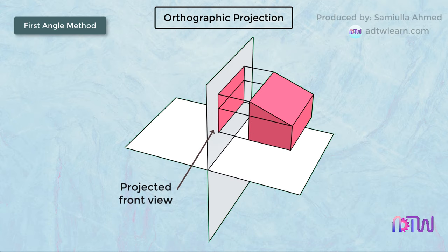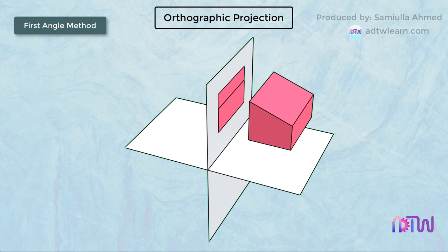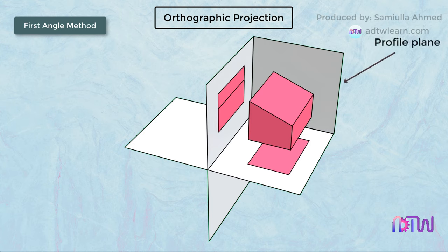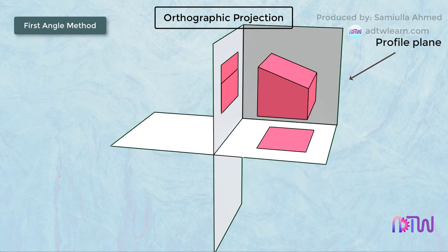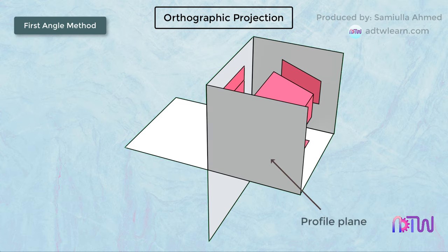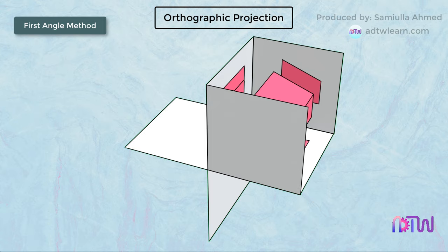When the viewer views the object from the top, its top view is projected on the horizontal plane of the first quadrant. For the left-hand side view, we consider another parallel plane placed on the right side of the object, and the left-hand side view is projected onto that profile plane. For the right-hand side view, we consider another parallel plane on the left side of the object, and the right-hand side view is projected onto the profile plane placed on the left side of the object.